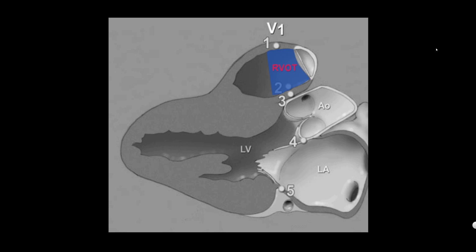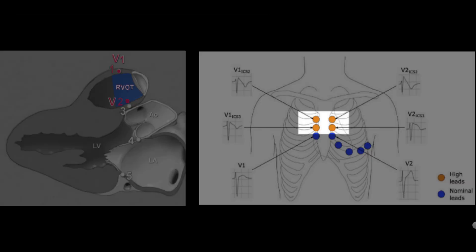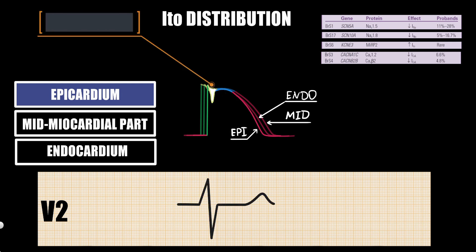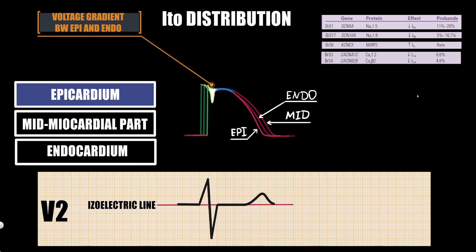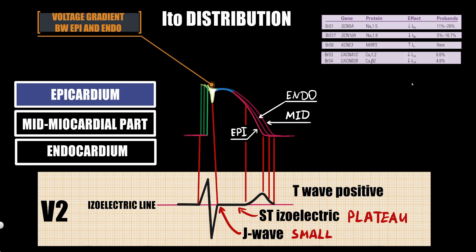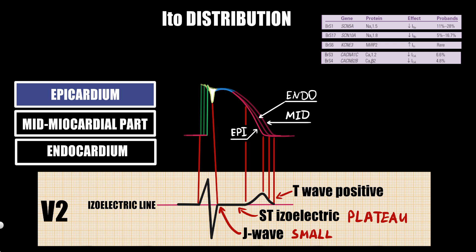On ECG, the right ventricular outflow tract is located near V1 and V2 chest leads, or sometimes near V1 and V2 placed in the second or third intercostal space. A prominent ITO-mediated action potential notch in ventricular epicardium but not endocardium produces a transmural voltage gradient during early ventricular repolarization, registering as J-wave elevation in V1 and V2. Under normal conditions, the J-wave is relatively small or virtually absent. The ST-segment is normally isoelectric due to the absence of transmural voltage gradients at the plateau level, and the positive T-wave reflects normal repolarization direction — epicardial repolarization finishing before endocardial and mid-myocardial.